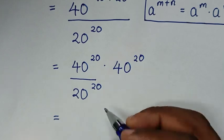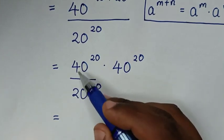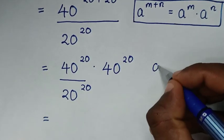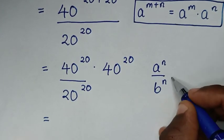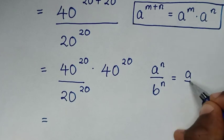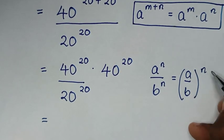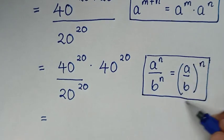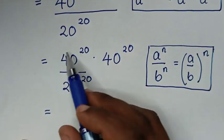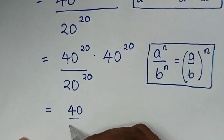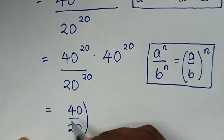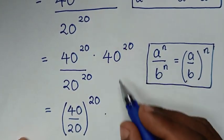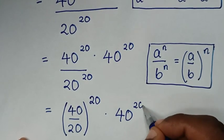Then it will be equal to — from this division of exponents with the same power of 20, this is in the form of a power of n over b power of n, which is equal to (a over b) to the same power of n. So we apply this form: it will be (40 over 20) power of 20, then times 40 power of 20.